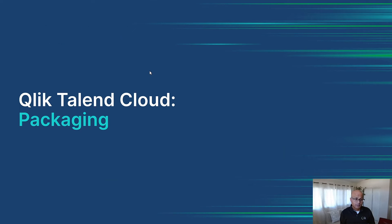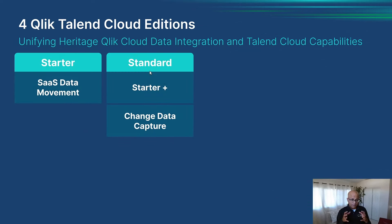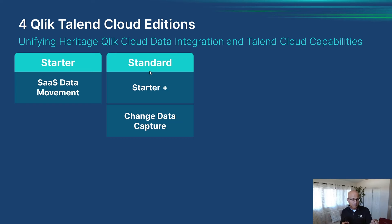Let's jump into the actual packages themselves. There are four editions. The first two are all about data movement. The Starter package helps you move data from hundreds of different sources — mostly SaaS applications — into a destination of your choice. This is where a lot of customers start. The Standard package builds on top of Starter, includes all of Starter's capabilities, and then adds real-time data replication with change data capture.